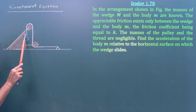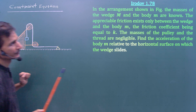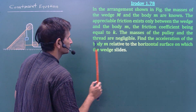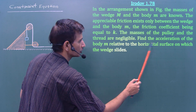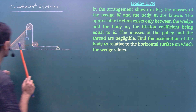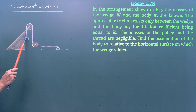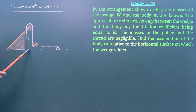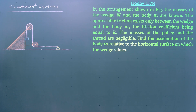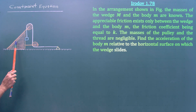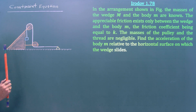Find the acceleration of the body m relative to the horizontal surface on which the wedge slides. So we have to calculate the acceleration of this block with respect to ground. This surface is smooth — there is no friction between the wedge and the horizontal surface.